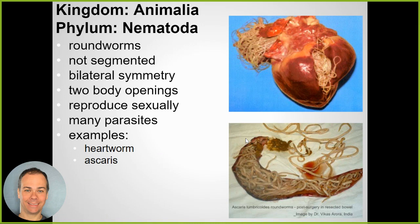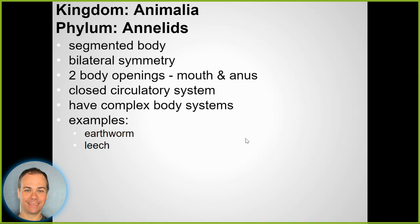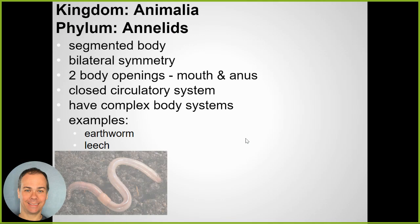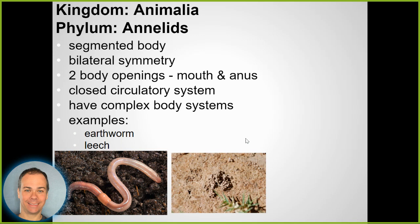Annelids are worms you're probably familiar with - like an earthworm. They're segmented worms. Earthworms are really good for soil. Those little clusters of soil you see are actually earthworm castings - earthworm droppings. They add nutrients and air to the soil; you can even buy worms online and put them in your garden to help improve the soil.